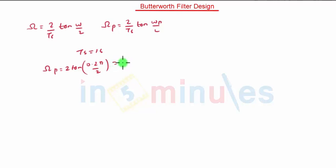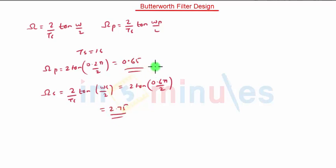for omega S is equal to 2 by TS tan of omega S by 2 that is 2 tan of 0.65 by 2. That will give us 2.75. So these are the values of omega P and omega S.